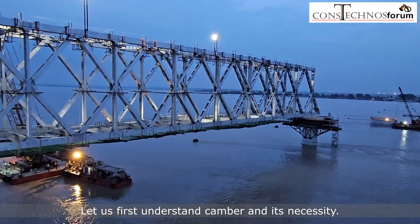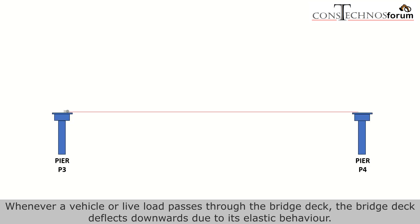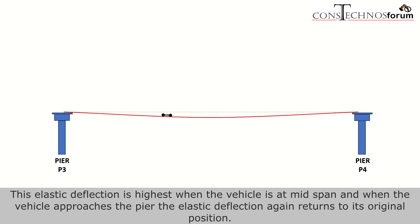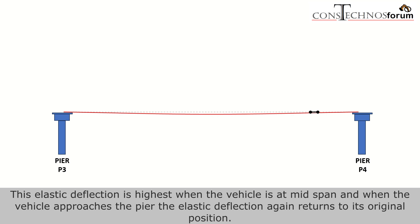Let us first understand camber and its necessity. Whenever a vehicle or live load passes through the bridge deck, the bridge deck deflects downwards due to its elastic behavior. This elastic deflection is highest when the vehicle is at mid-span, and when the vehicle approaches the pier, the elastic deflection returns to its original position.